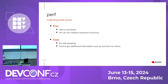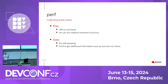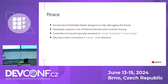The advantages of using stack traces with perf: there's still no overhead and we can already see relations between functions. The disadvantage is it's still sampling so we may still be losing events, and it's still hard to get additional information — for instance, we can't extract how long each function ran. To overcome that, let's use another technology: ftrace.